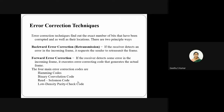In forward error correction, the receiver can generate the actual data itself without needing retransmission. There are various error correction codes; the widely used ones are Hamming code, binary convolution code, Reed-Solomon code, low-density parity check code, and so on. Today we are going to discuss the Hamming code mechanism, which is a widely accepted error correction technique.